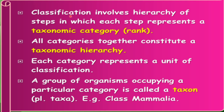Classification involves a hierarchy of steps, in which each step represents a taxonomic category, also called a rank. All categories together constitute a taxonomic hierarchy. Each category represents a unit of classification, and a group of organisms occupying a particular category is called a taxon, or in plural form, taxa.